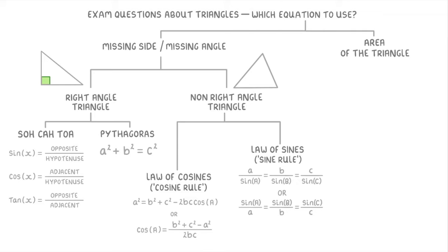Finally, if you're looking for the area of a triangle, then you're going to be using one of these two equations. It's a bit hard to explain which one to use, but basically if you can find the base and height of the triangle, then you can use this top one, whereas if you know two sides and the angle in between them, then you can use this bottom one.